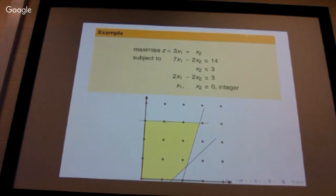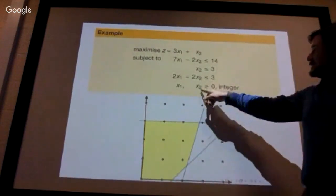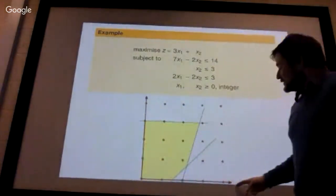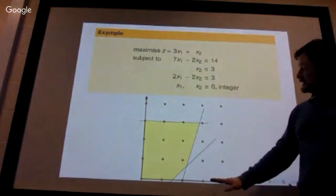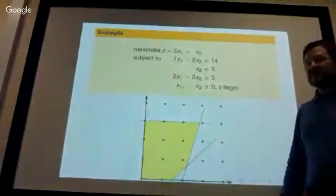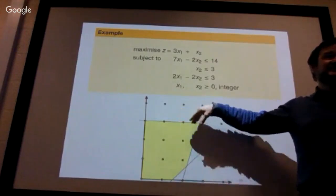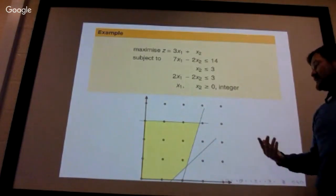There's an important concept: what is a valid inequality? You've got your constraints and the non-negativity constraints, which give you a horizontal line, a vertical line, and the constraints give you the half-planes which you have to be in. If it's just a linear programming problem, all the feasible solutions are just the yellow points.